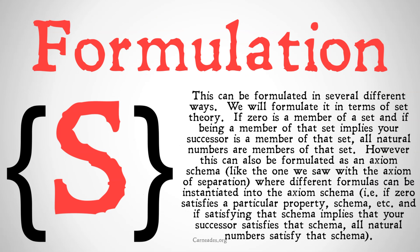This can be formulated in several different ways. We're going to formulate it in terms of set theory: if zero is a member of a set, and if being a member of that set implies that your successor is a member of that set, then all natural numbers are a member of that set. However, this can also be formulated as an axiom schema — like the one we saw with the axiom of separation earlier in this series — where different formulas can be instantiated into that schema. This is one of the reasons that set theory is really nice for managing higher order logic issues, because we can just talk about being members of sets as opposed to satisfying a particular property or schema.